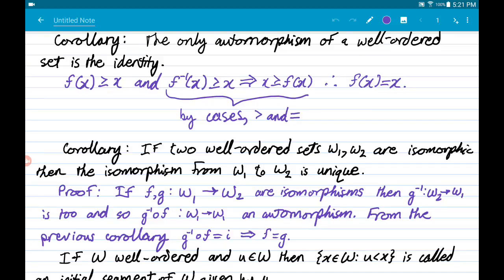Okay, to keep going with these corollaries and lemmas about well-ordered sets, we will show that the only automorphism of a well-ordered set is the identity. If it maps to itself and is an isomorphism, there is just one such thing, and it is only the identity.